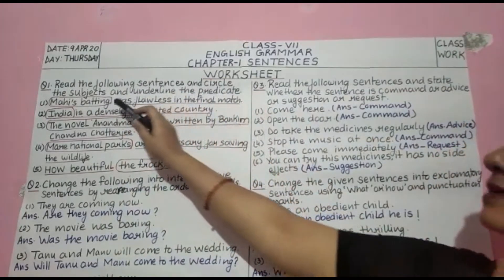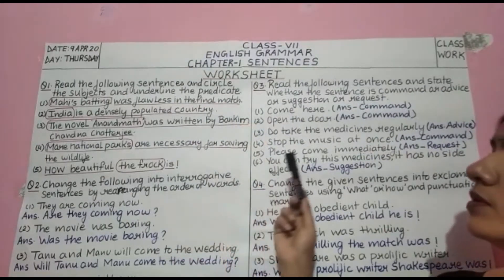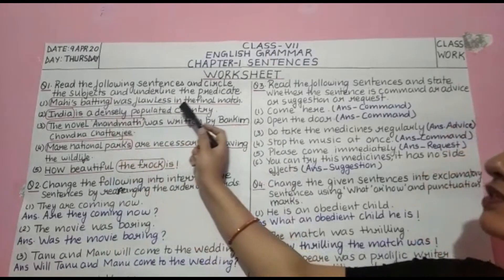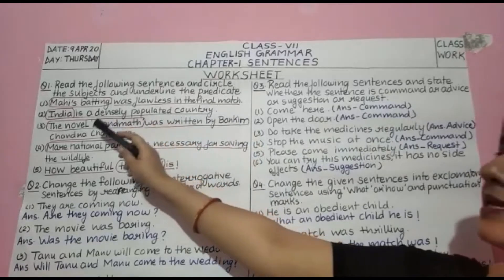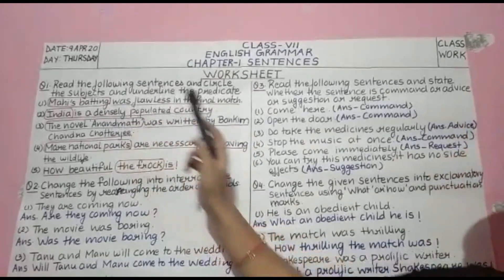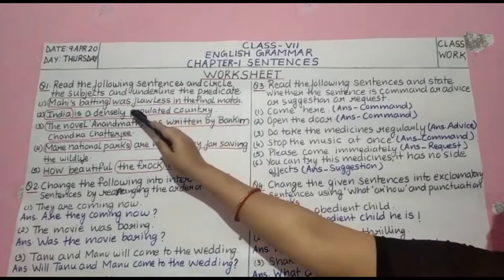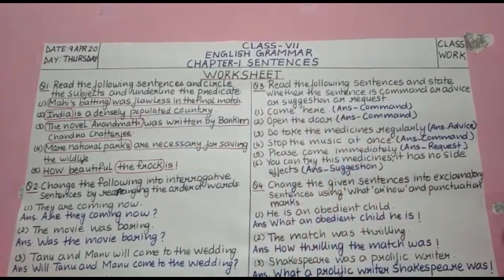Read the following sentences and circle the subjects and underline the predicate. First point: 'Mahi's batting was flawless in the final match.' In this sentence, 'Mahi's batting' is the subject because we are talking about Mahi's batting. 'Was flawless in the final match' is the predicate.